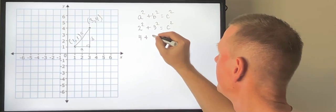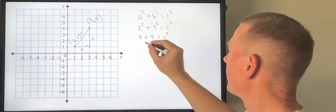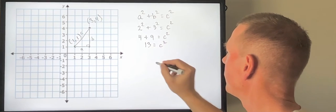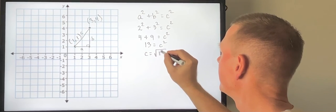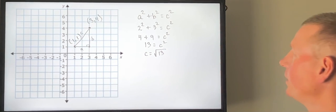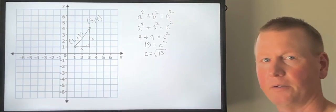So I get 4, I get 9, I get 13 is equal to c squared and then I would know that the distance from point (1,1) to point (3,4) would be the square root of 13. That's utilizing the Pythagorean Theorem.